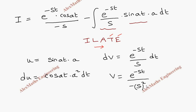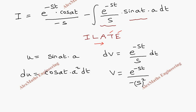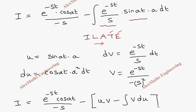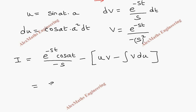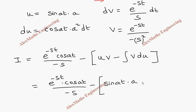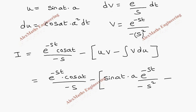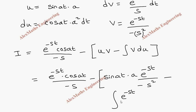Now once again in this place we apply the formula uv minus integral of v du. So I equals the first term e^(-st) times cos(at) divided by -s, minus the bracket: sin(at) times a times v which is e^(-st)/(-s²), then minus the integral of v times du, where v is e^(-st)/(-s²) and du is cos(at) times a² dt, bracket close.